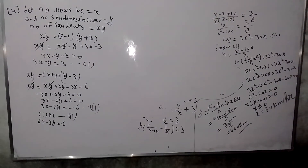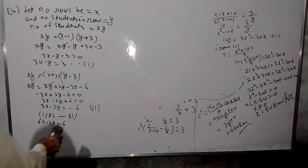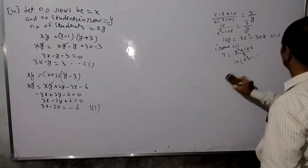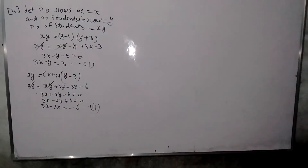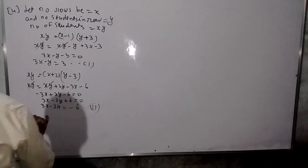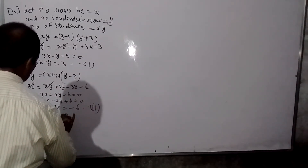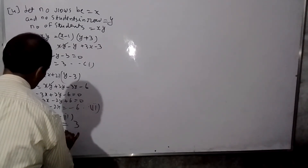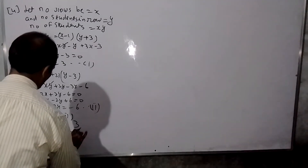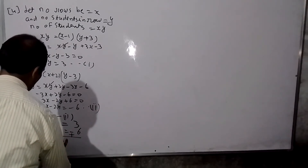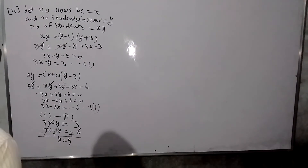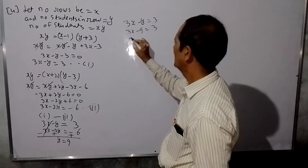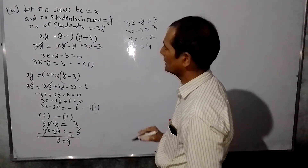Solving the system: 3X minus Y equals 0 and 3X minus 2Y equals minus 6. Subtracting: Y equals 9, so Y equals 9. Substituting back: 3X minus 9 equals 0, so 3X equals 9, giving X equals 3.